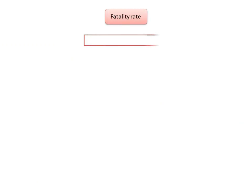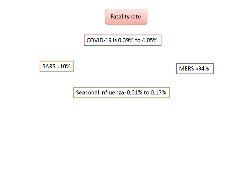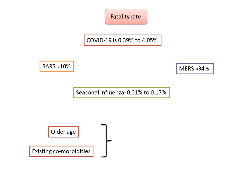According to current data, the fatality rate — cumulative deaths divided by cumulative cases — of COVID-19 ranges from about 0.39% to 4.05% depending on different regions of China. This is lower than that of SARS, which was approximately 10%, and MERS, which was approximately 34%. Yet it is higher than that of seasonal influenza, which is only about 0.01% to 0.17%. In general, older age and the existence of underlying comorbidities such as diabetes, hypertension, and cardiovascular disease were associated with poorer prognosis.